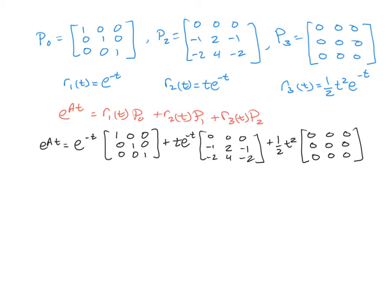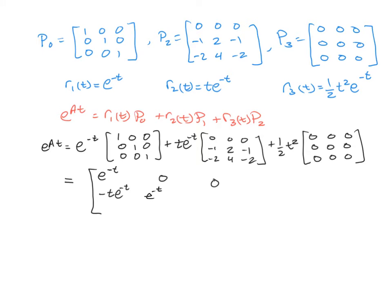Now we're going to rewrite this as one single matrix by distributing those coefficients and adding up the different entries. So E to the AT equals a 3×3 matrix with E to the negative T in the first entry, 0 in the next, and 0 in the 3,1 entry. Moving to the second row: 0 from the first term, a negative T E to the negative T from the middle, and nothing from the last. For the middle entry, we get E to the negative T plus 2T E to the negative T, and a 0 from the last. Then we pick up 0 and a negative T E to the negative T.